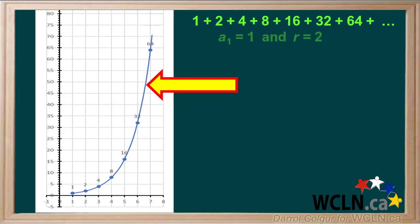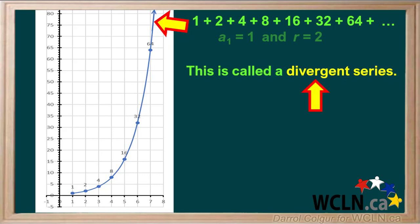Here's a graph of the first seven terms of this series. We see that the slope increases as the term number increases. We can draw an arrow projecting how this curve will go as we increase the term number; the value of the terms will keep getting higher and higher, and the slope will keep on increasing. This is called the divergent geometric series.